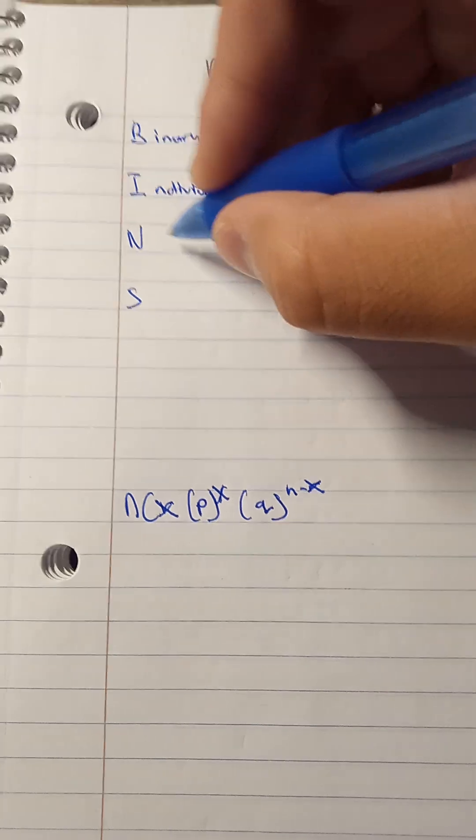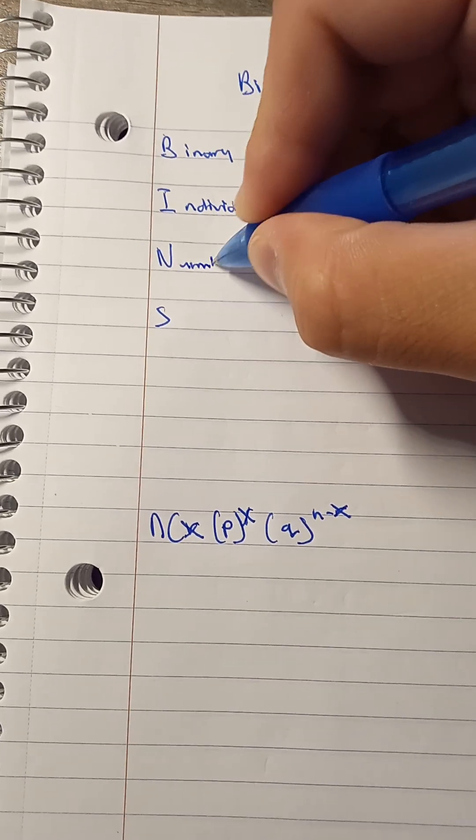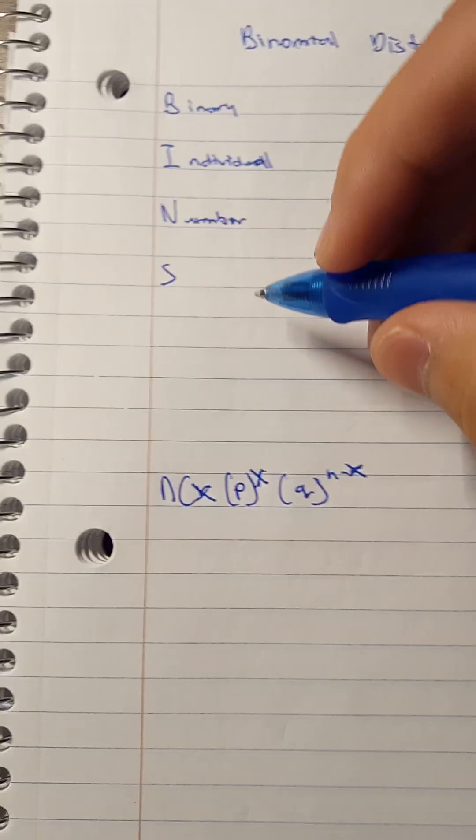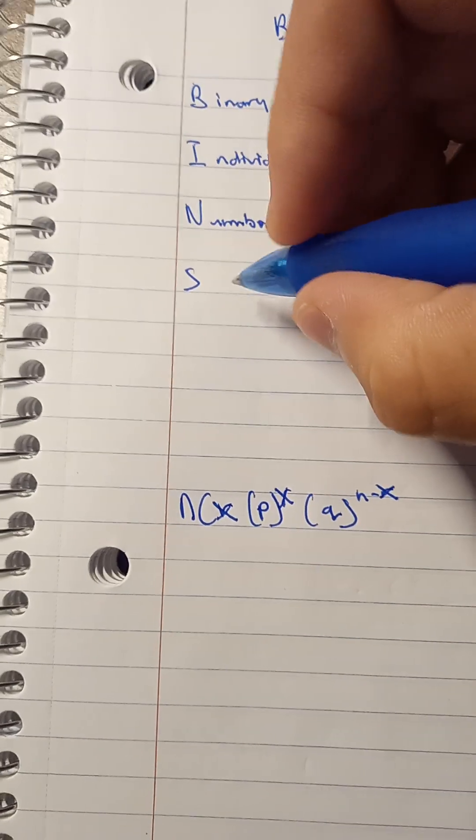And N is for number of trials. Say for example, I were to flip a coin 5 times. And S is for same probability for every single trial.